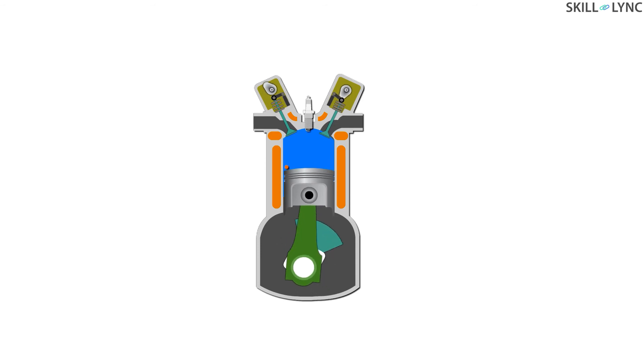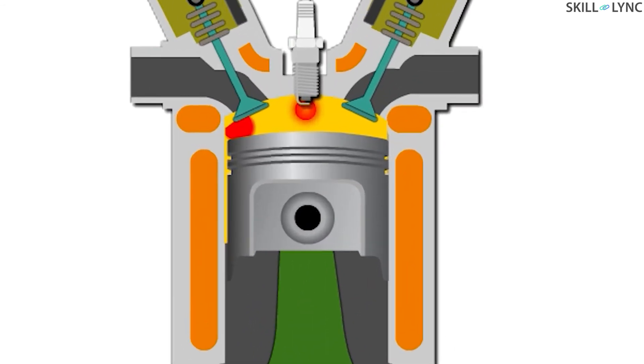When the piston reaches the BDC, the inlet valve is closed and the piston starts moving from bottom dead center to top dead center. As a result, the air or mixture is compressed and the maximum pressure is reached when the piston is close to the TDC.